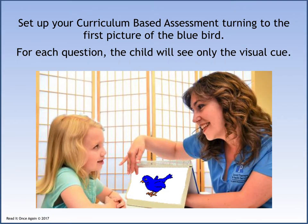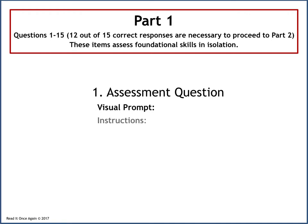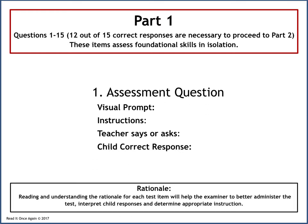Set up your curriculum-based assessment turning to the first picture of the bluebird. For each question, the child will see only the visual cue. On every reverse side of each test item, the assessor will consistently be given this information: assessment question, visual prompt, instructions, teacher says, and child correct response. The rationale for each skill — reading and understanding the rationale for each test item — will help the examiner to better administer the test, interpret child responses, and determine appropriate instruction.